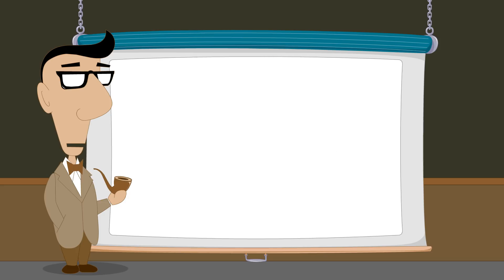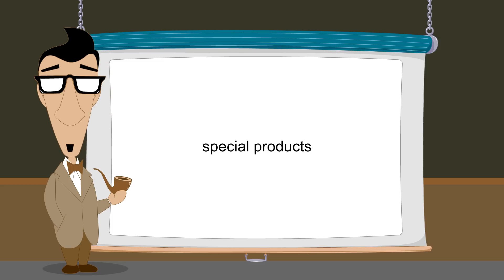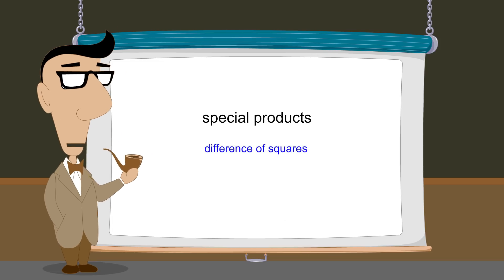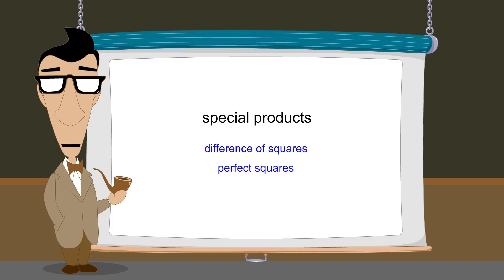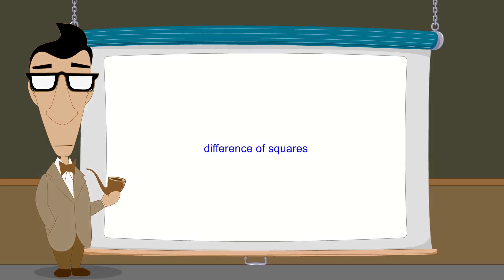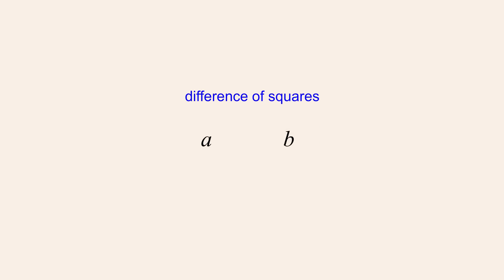Fortunately, there are several cases of quadratic expressions called special products whose factors can be easily identified. These cases include quadratic expressions that are the difference of squares, and quadratic expressions that are perfect squares. In this lecture, we will see how to factor quadratics that are the difference of squares.